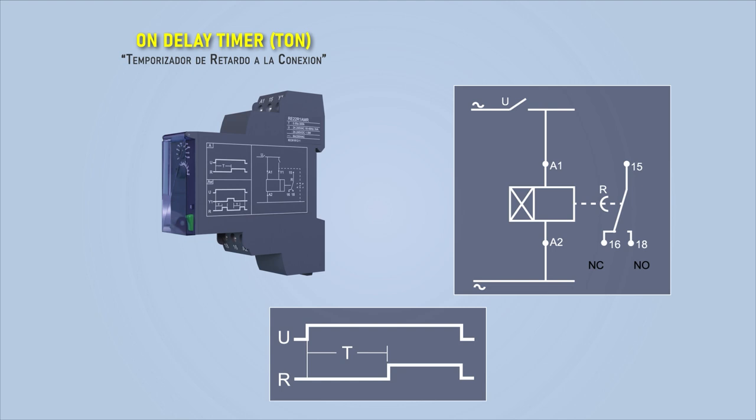This device has terminals A1 and A2 that serve to power the coil. It also has input terminal 15 and output terminals 16 and 18.